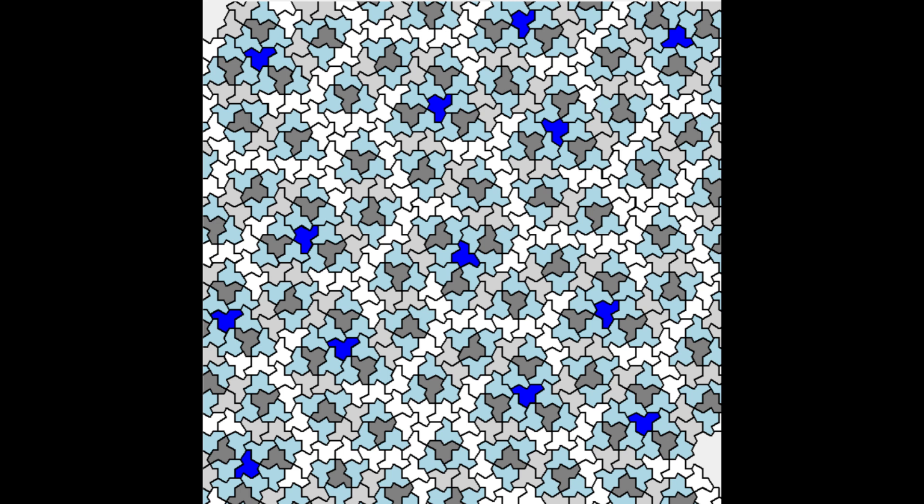But we noticed that when we generated the pattern, there were parts of the pattern that looked exactly the same. And obviously, if you zoomed into a small part, it wasn't going to be completely unique, because there were other parts of the pattern that looked exactly the same.